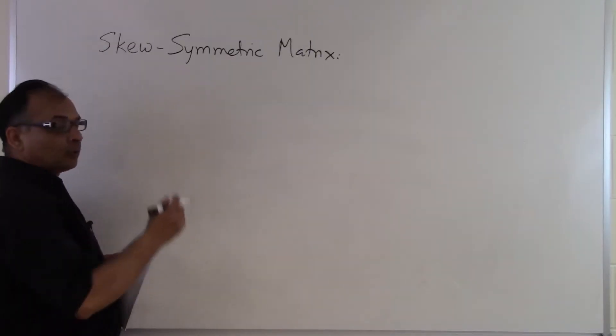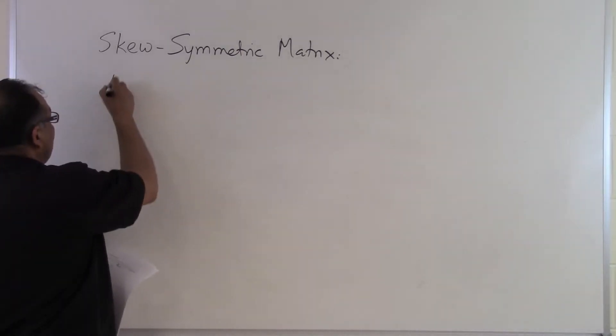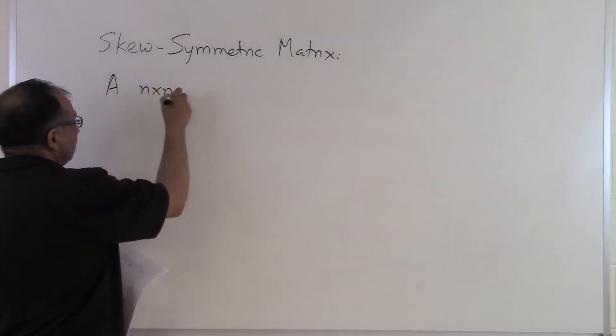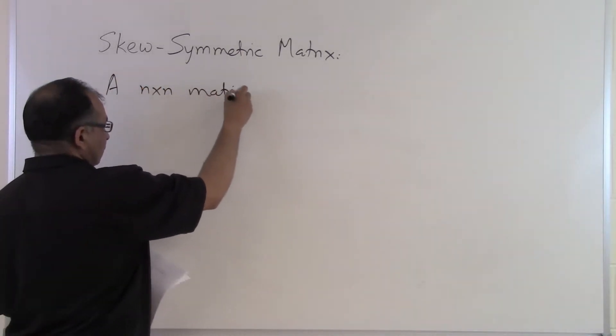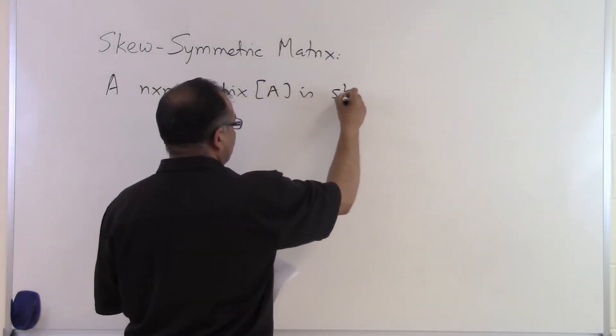So in this segment we will talk about what a skew symmetric matrix is. So in a skew symmetric matrix you have an n by n matrix A, so it's a square matrix, a skew symmetric.